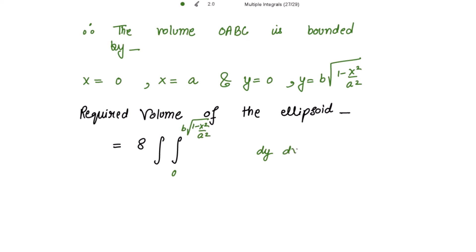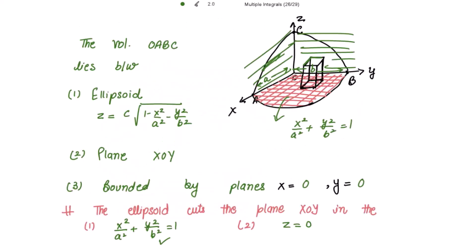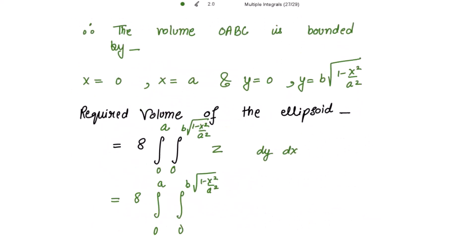The limits for y go from 0 to b times square root of 1 minus x-squared over a-squared, and the limits for x go from 0 to a. So the total volume is 8 times the double integral from 0 to a and from 0 to b√(1 − x²/a²) of c times square root of 1 minus x-squared over a-squared minus y-squared over b-squared, dy dx.